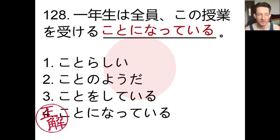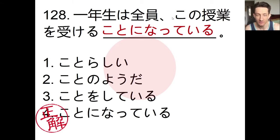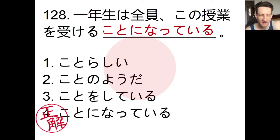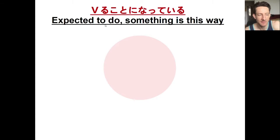一年生 means first-year students — not necessarily elementary school, it could be first-year high school students. 全員 means everyone. 受けることになっている means 'must take' or 'is expected to take' this class. We're going to take a closer look at using ことになっている with the dictionary form of a verb. Basically, it expresses that something is expected, or that something just became that way — not necessarily because of the subject's own decision.